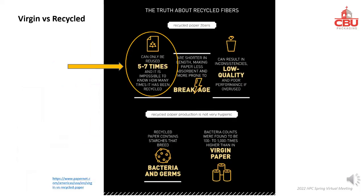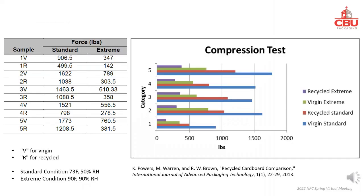Paper can be recycled about five to seven times. For each recycling, the fiber length of the paper becomes shorter, thus weaker. Therefore, corrugated boxes made from recycled paper may be weaker. In this study, five different box sizes were used, each with boxes made from virgin paper and from recycled paper, represented by V or R. They were tested under standard conditions of 73°F and 50% RH, as well as under extreme conditions of 90°F and 90% RH. In both conditions, boxes made from virgin paper performed better than those made from recycled paper.